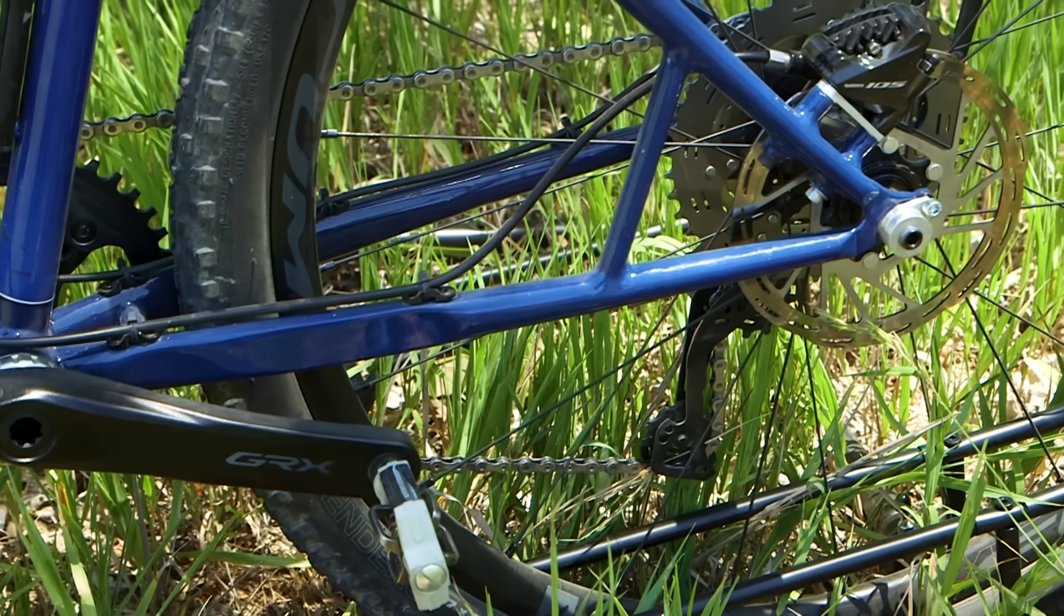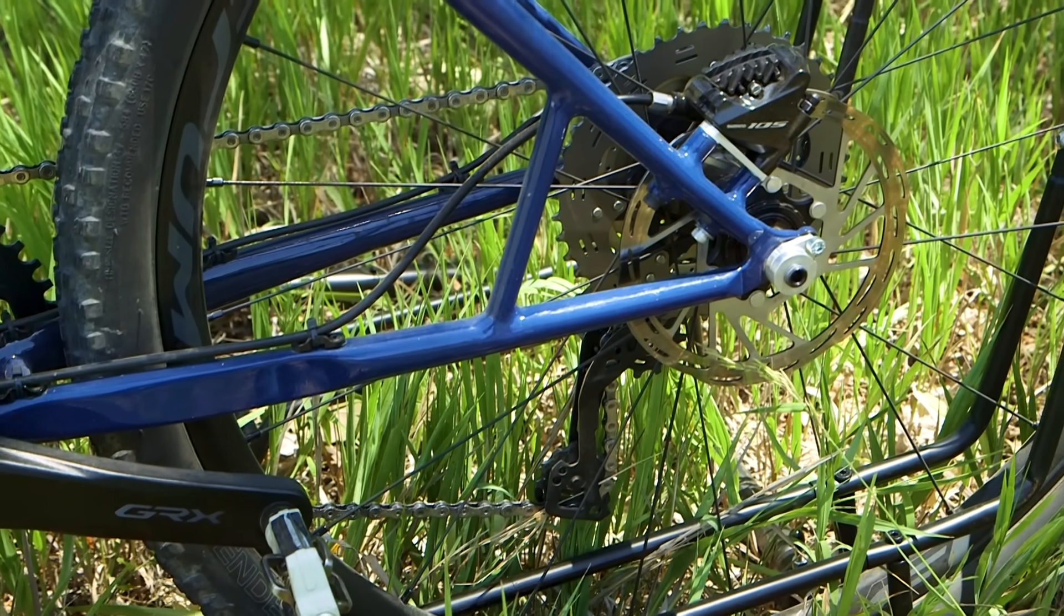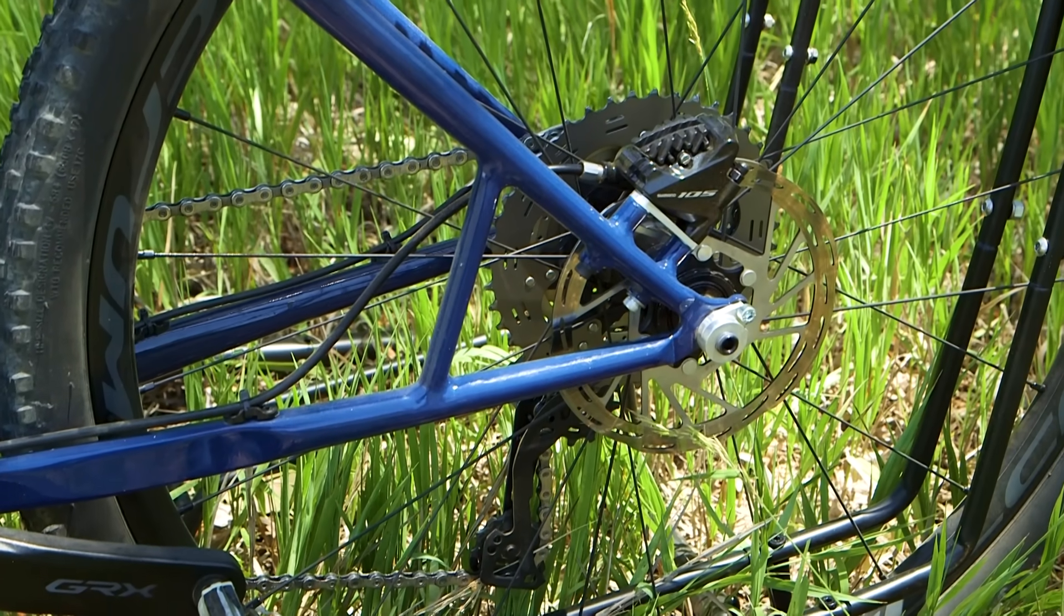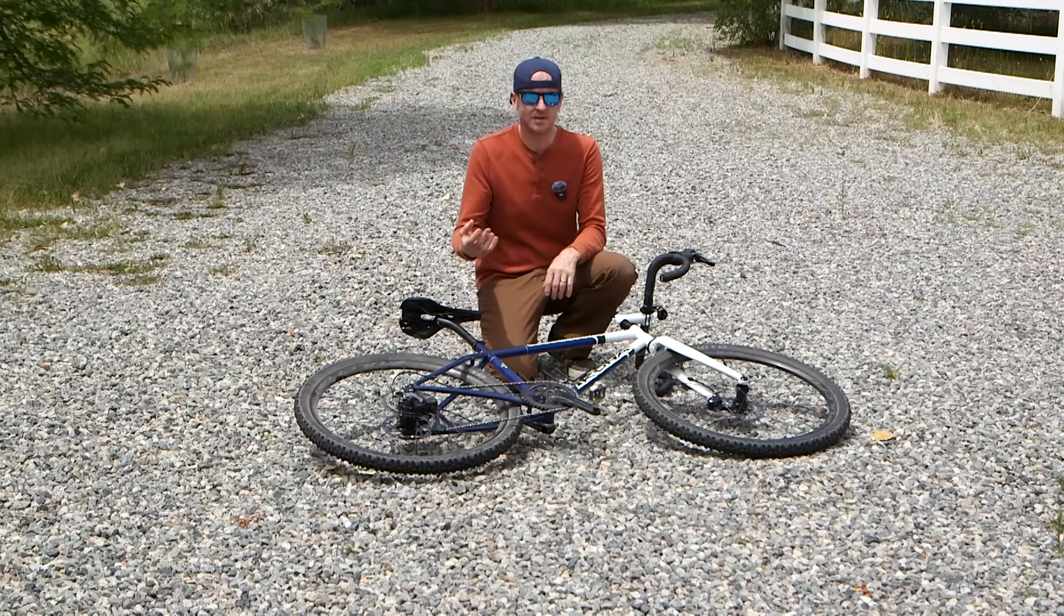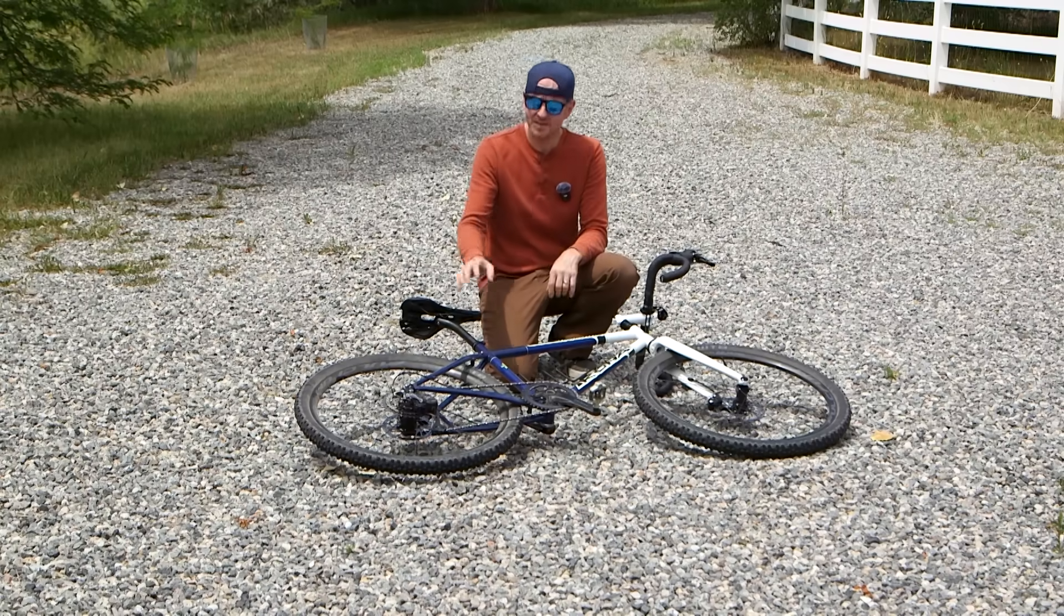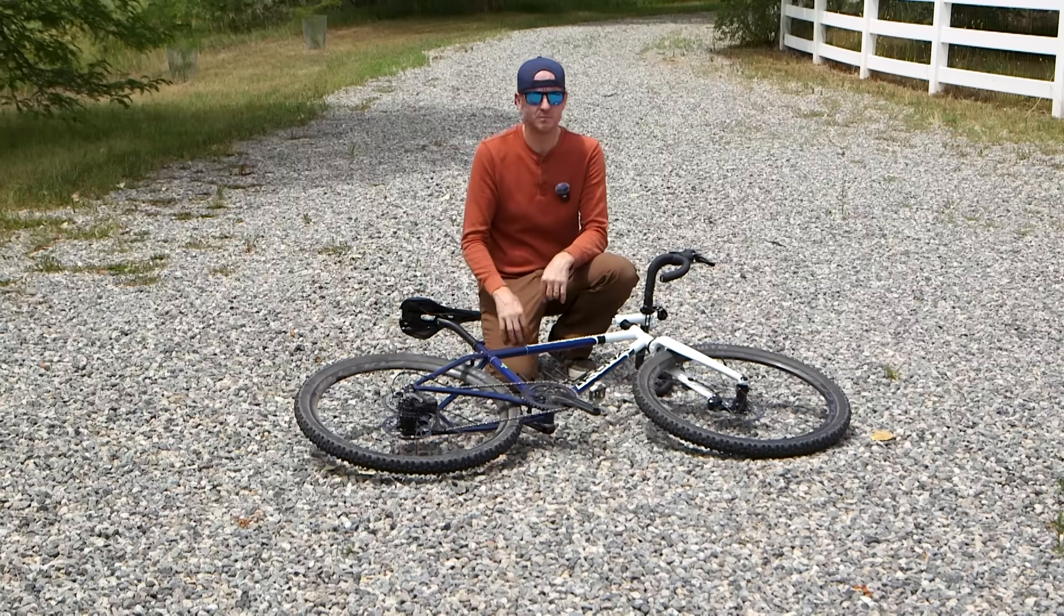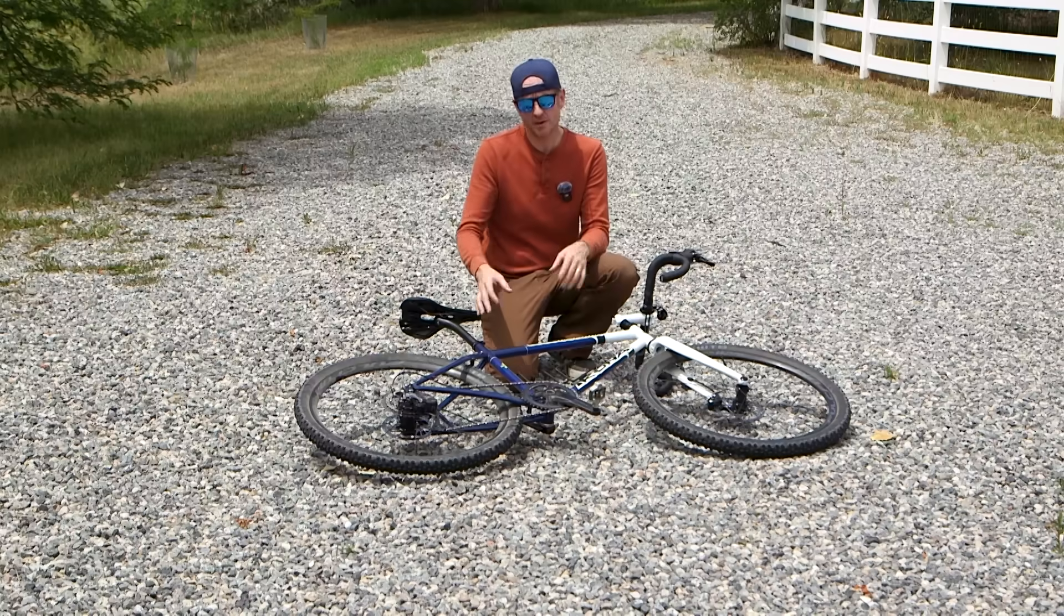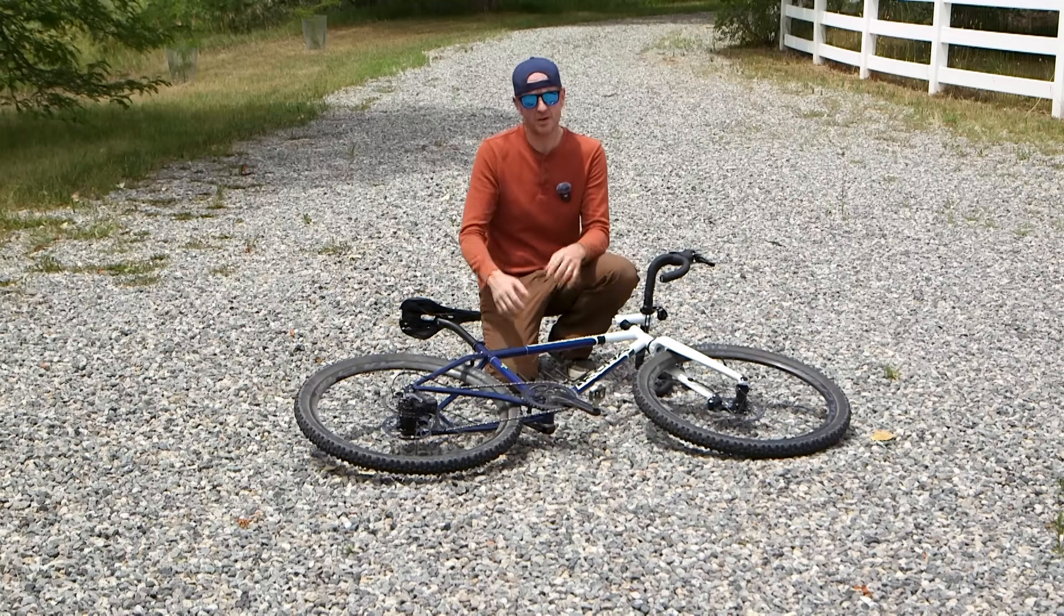You've seen me do this through-axle and disc brake conversion before. I did it on the Gary Fisher build. On that bike, I welded a nut to the dropout. I like this approach a lot better. It turned out nicer and it took less time. So if you're going to follow my lead, I recommend doing it the way we did it in today's video.